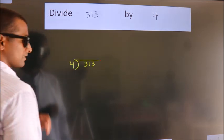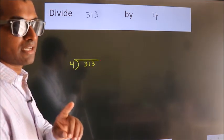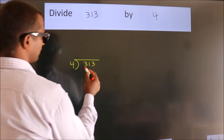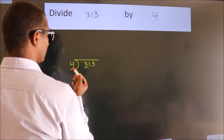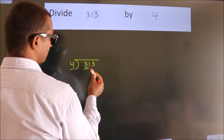This is your step 1. Next, here we have 3, here 4. 3 smaller than 4. So we should take 2 numbers, 31.